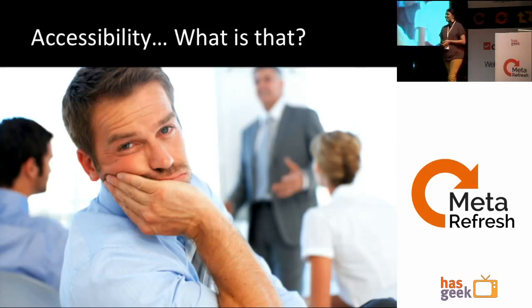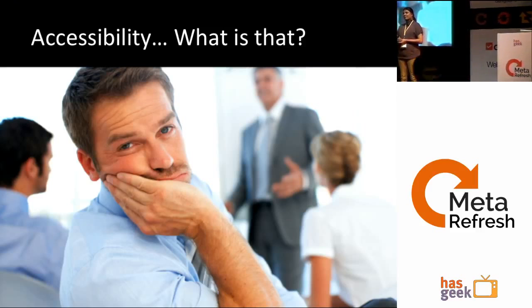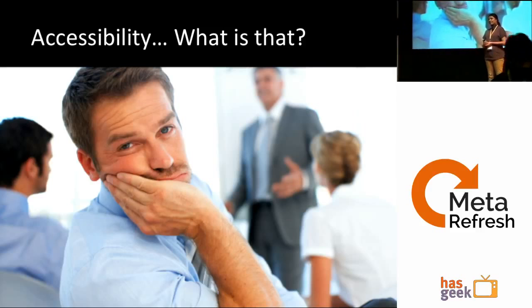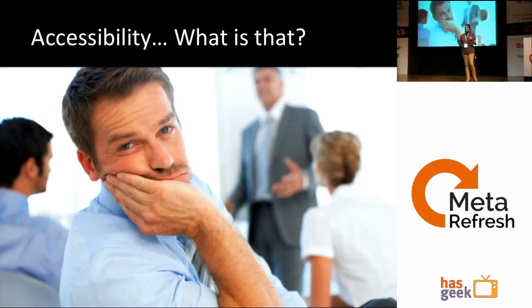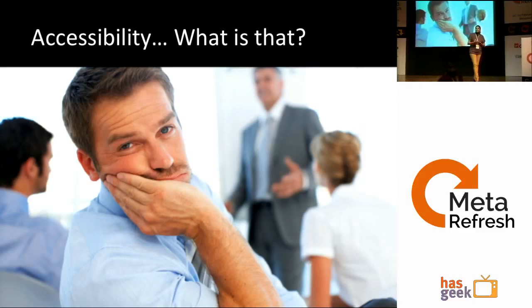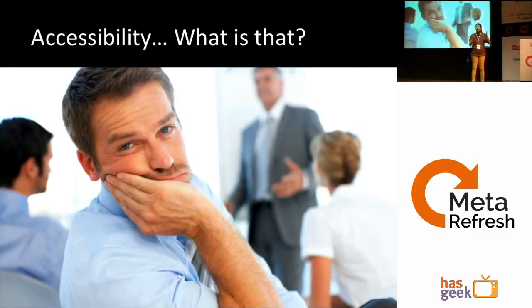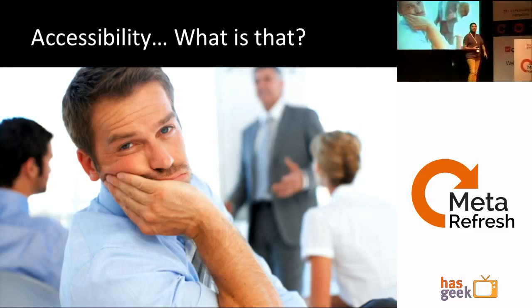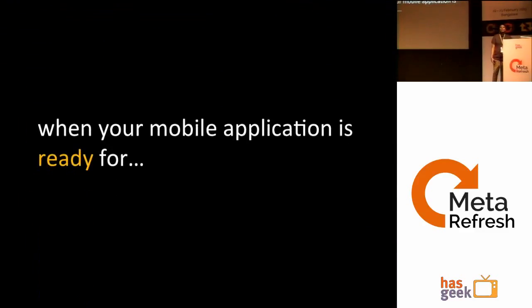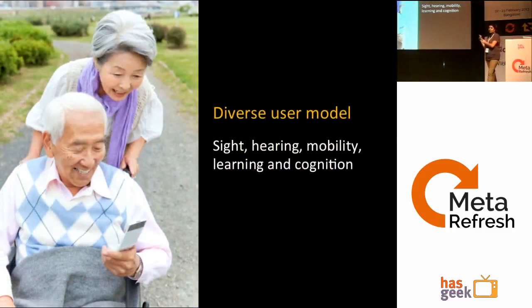Making sure the largest section of the population can access all the content on your screen — whether on a computer or mobile. To me, accessibility means making an application accessible and usable for everyone, irrespective of age, ability, and situation. For a mobile application, I call it accessible when it is ready for the diverse user model — sight problems, hearing problems, cognition issues.